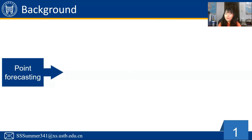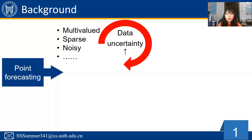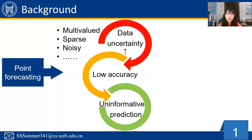Most existing forecasting methods are point forecasting. However, prediction accuracy drops significantly once the level of uncertainty increases, such as when using datasets with multi-valued, sparse, or noisy data when addressing prediction and regression problems. Meanwhile, point forecasting brings out only point prediction values without any further information about the accuracy of prediction.